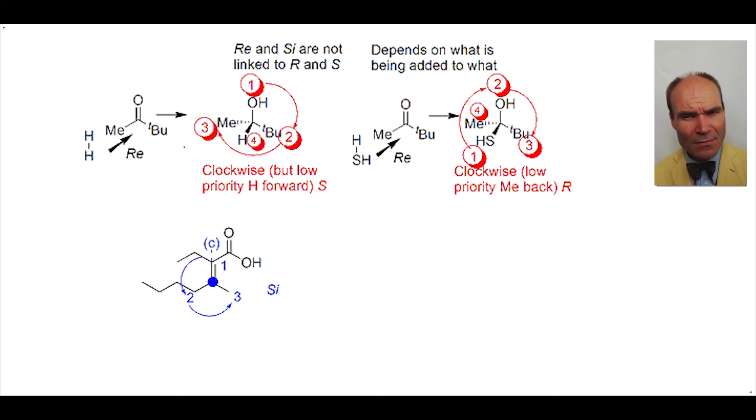What about the upper carbon of the alkene? We invoke a ghost carbon on the lower substituent and with priorities assigned we see a clockwise motion when going from highest ultimately to lowest priority. Thus we assign Re to this face. So the same face of the molecule is Re for the upper carbon and Si for the lower carbon of the same alkene.